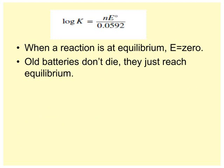When a reaction is at equilibrium, E is zero. Old batteries don't die, they just reach equilibrium. If you're at equilibrium, that means the electrons are flowing both ways at the same rate, which means there's a net change of nothing. So it's important to know that when a reaction is at equilibrium, E is zero.